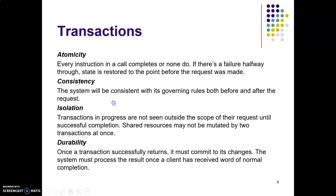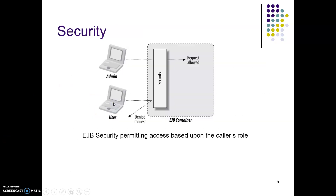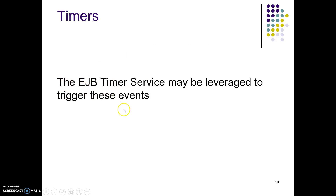Next is security. Security is about giving access to a particular user. There is one admin and one user, and some requests inside the EJB container. The admin is allowed access inside the container, whereas the user is denied access because of the security rules provided by the security module. Security is also handled by EJB.